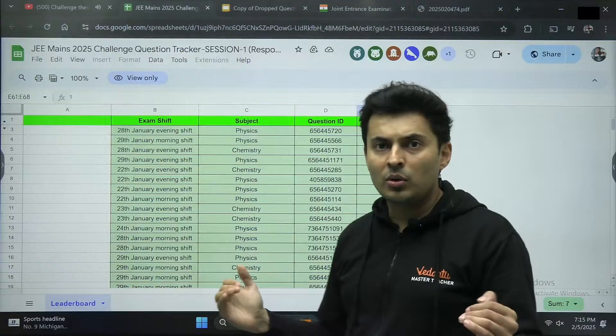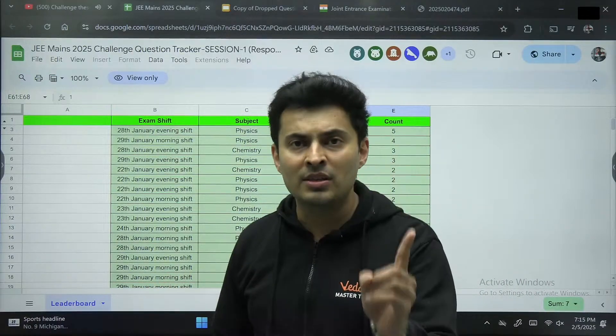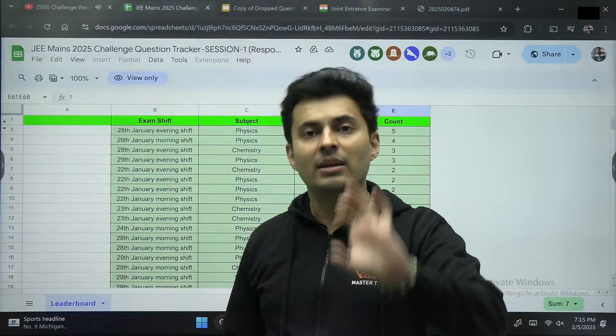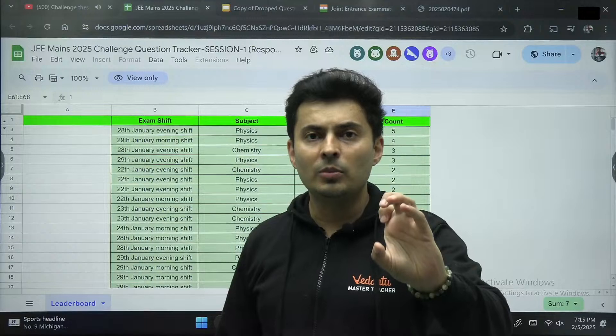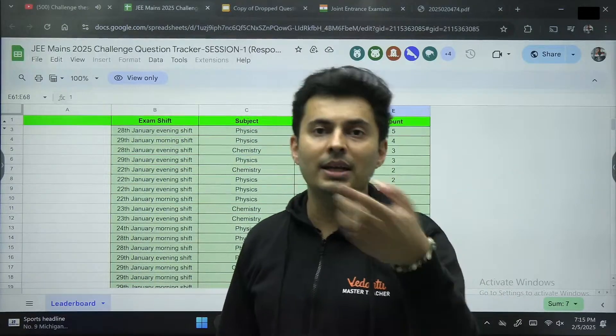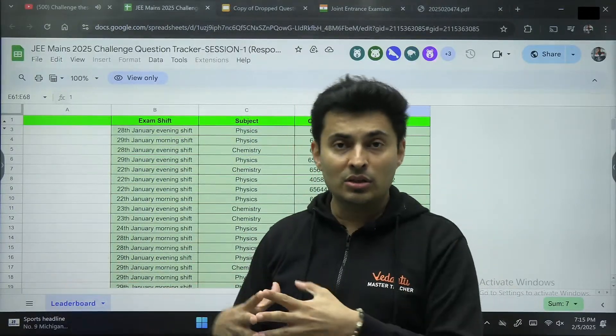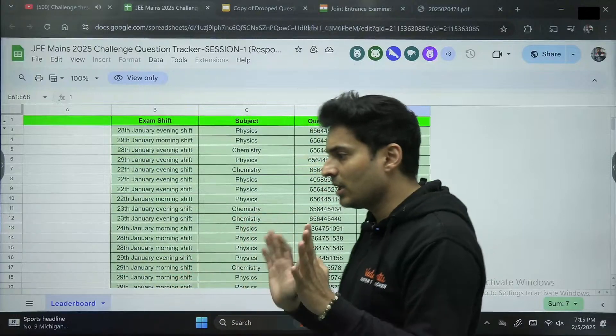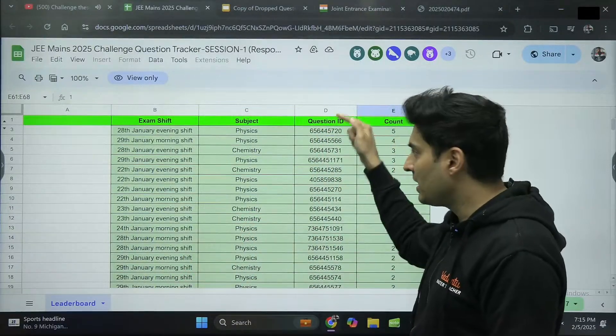Remember, one thing, the rule which NTA follows is even if there is one student who is challenging it, and if something is found to be problematic, then everybody gets bonus. So it's not like, oh, 10,000 students should be there. All right. So keep this in mind. So this tracker is there.